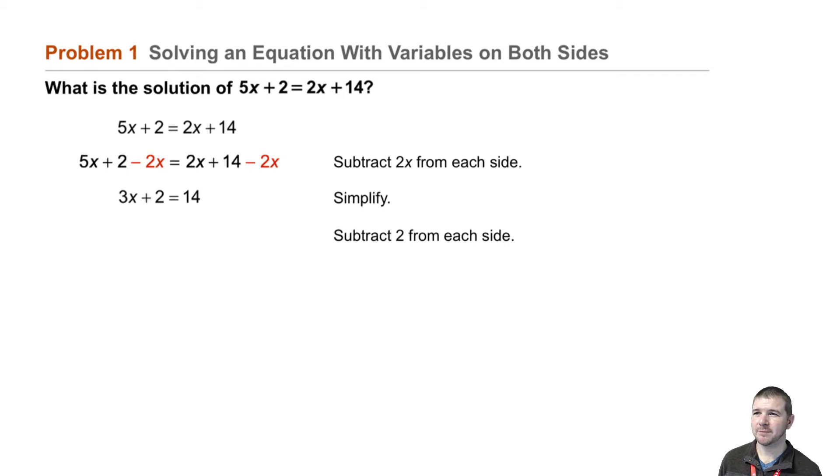Remember our goal is to get x by itself or isolate x. Right now we have 3x plus 2 on the left hand side, so to undo the plus 2, we use an inverse operation and subtract 2. Simplifying, 3x plus 2 minus 2 is simply 3x, and 14 minus 2 on the right hand side is 12.